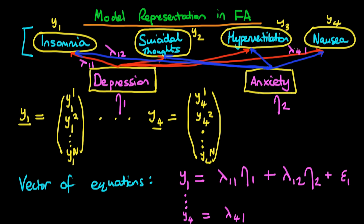Lambda41 here is because we are talking about the loading on the fourth observed characteristic, which is nausea, and we're talking about the loading of depression, which is the first unobserved variable. So then what we have to do is we have to multiply that by eta1.